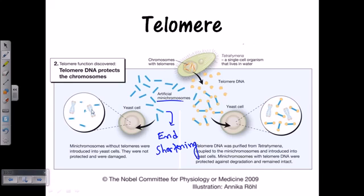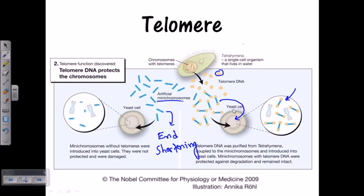In a second experiment, they took these artificial mini chromosomes and cut telomeric DNA from another organism — for example, Tetrahymena — and added that telomeric DNA to both ends of the artificial mini chromosomes. They then re-injected these chromosomes into the yeast cells, and after certain rounds of cell division those chromosomes remained intact. They showed no damage and lost no DNA from the terminal ends, demonstrating the importance of telomeric DNA in preventing chromosome damage and the end replication problem.